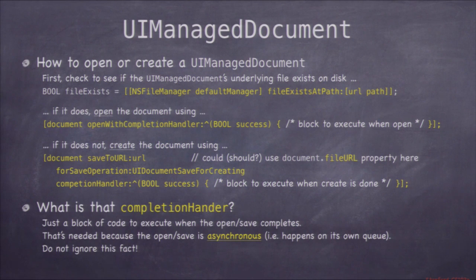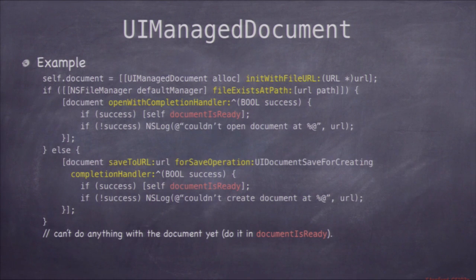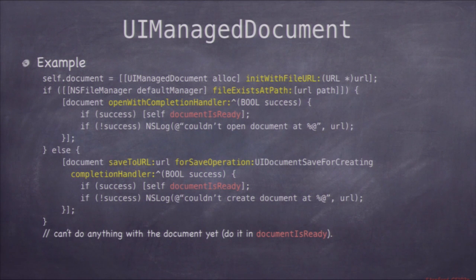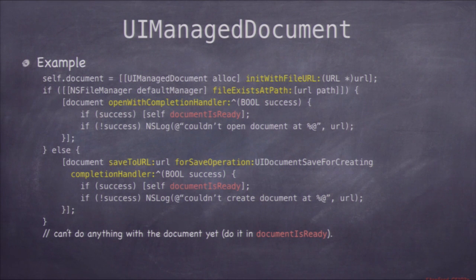Let's talk about what this looks like in code. You check if the file exists. If it does, open it; if it doesn't, create it. Inside that completion handler, if you successfully opened or created it, you call some method — I've called it 'documentIsReady' — that says the document is ready to go, and now you can use it. You're doing the same thing in either case. You're going to have this little sequence of code in almost any app that uses a UIManagedDocument.